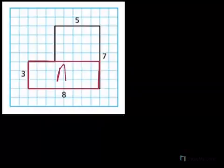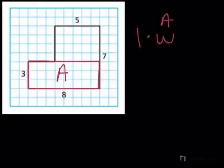So we'll start with figure A. I know to find the area of a rectangle, I just multiply length times width. So I know this side is 8, but I'm not sure what this side is. Oh, over here I have 3. So it's going to be 8 times 3. Well, that is the area of shape A.